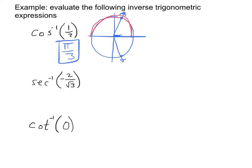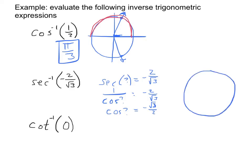Next, the inverse secant of -2/√3. Just like we handled arc cosecant, this means the secant of some angle is -2/√3, so 1 over the cosine of that angle is -2/√3. Taking the reciprocal of both sides, cosine of that angle equals -√3/2. So I'm looking for where the x-value is -√3/2, which gives angles in the second and third quadrants. Cosine-based inverse trig functions have principal values in the first and second quadrants, so the answer is 5π/6.